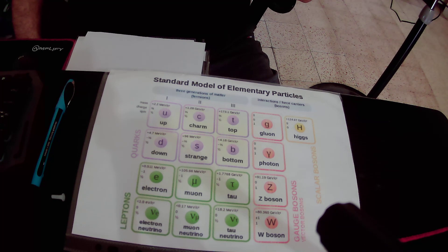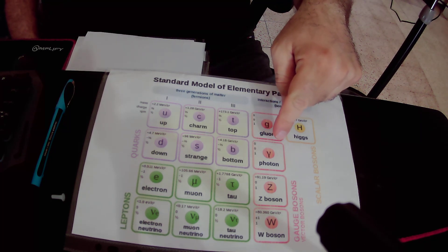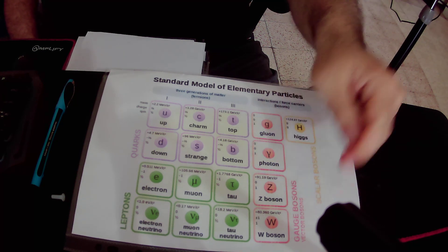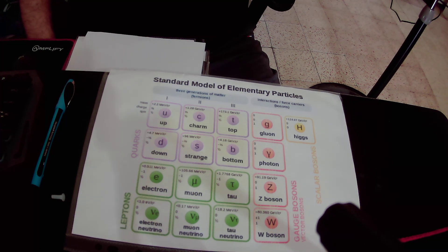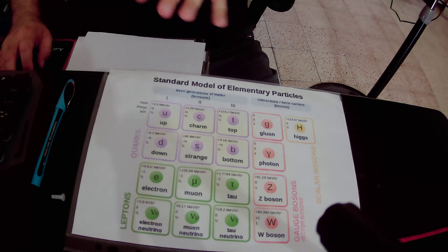In total, in this table we have 12 elementary force particles, because we have 8 gluones, 1 photon, 1 boson Z, and 2 types of boson W. We also have the 13th elementary force particle that is not in this table.